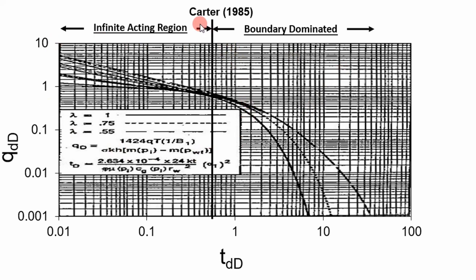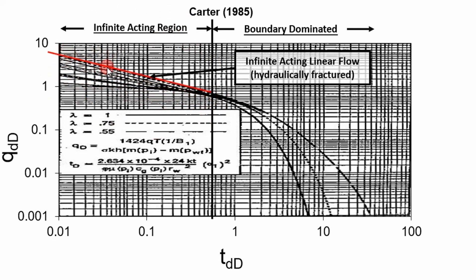If you look at this focus in on this infinite acting region, you can get a lot of information from this. The curve at the top here represents infinite acting linear flow or a hydraulically fractured well. The slope of this line is a negative half slope, meaning that for every two cycles you go down, you're going across four cycles. Another indicator is at the bottom here. The bottom of this line represents infinite acting radial flow. So if you plot your data on here and it follows this line, it suggests that you have infinite acting radial flow. If it goes up to the top, then it suggests you have infinite acting linear flow.